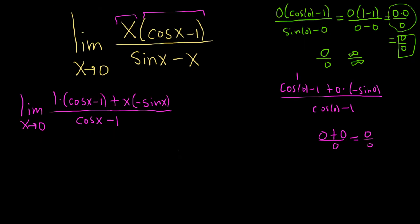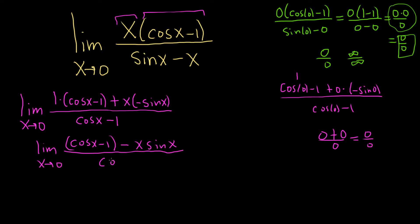Let's go ahead and do that, but first let me clean this up a little bit. This is the limit as x approaches 0 of cosine x minus 1, and we're going to use the product rule here. I'll write it like this: minus x sine x, over cosine x minus 1.